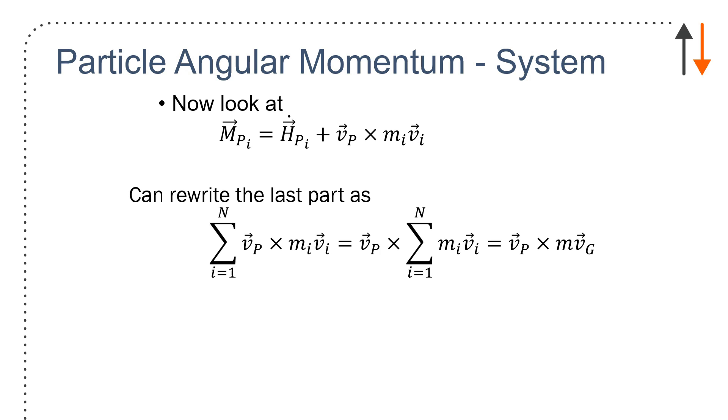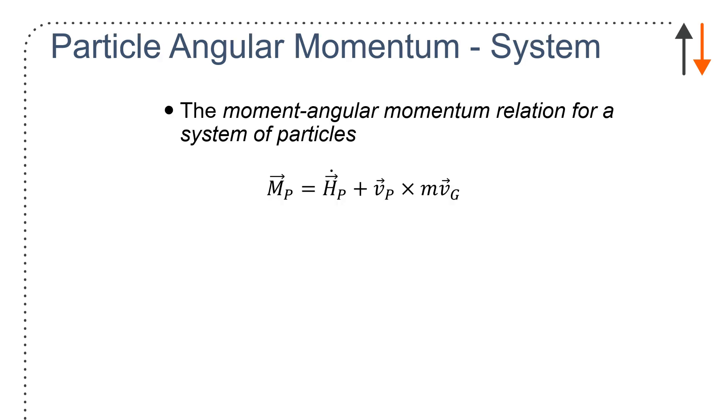So these are getting complex in terms of writing the equations, but the ideas are pretty basic. So the total angular momentum about point P is just going to be the sum of all of the momentum. So I take the angular momentum of each of the individual particles, sum them up, I'll get the total system. And that's what I end up with is the angular momentum relation for a system of particles is sum moments about point P equals H_p dot plus v_p crossed with m v_g.